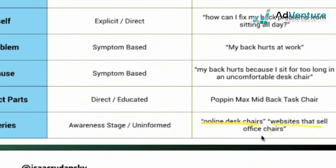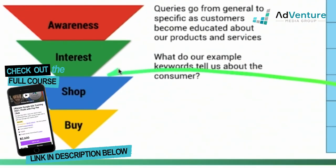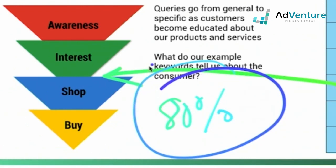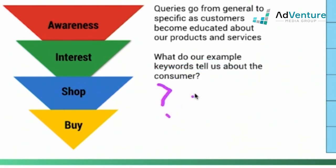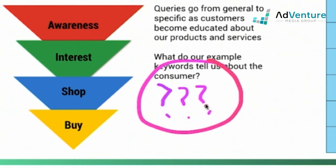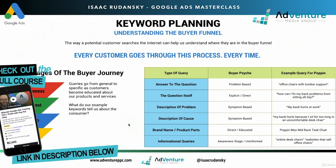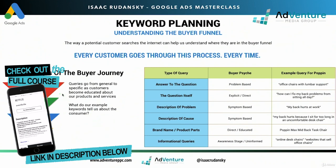Informational queries — 'online desk chairs,' 'websites that sell office chairs' — those are almost all typically somewhere between interest and shop. And that's where about 80% of your account is going to lie. 'Online desk chairs' is probably leaning more towards shop. 'Websites that sell office chairs' might lean a little more towards interest — they're looking to browse multiple websites, still developing the desire to buy, or maybe already in that shopping stage doing comparison shopping. The thing to realize: it's very, very hard — almost impossible — to predict with 100% accuracy exactly what stage of the buyer's funnel a person is in based on what they search Google for.